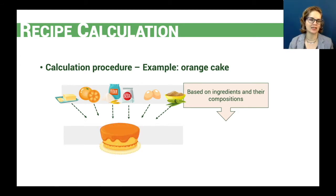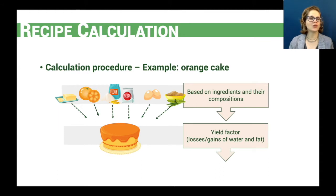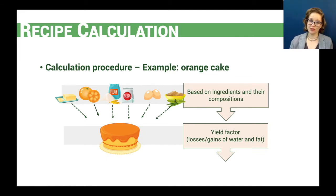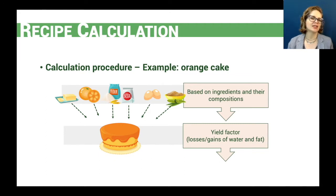The next step is to know the final weight of the recipe — how much cake we can produce with the ingredients we're using. This is the yield factor. The yield factor indicates the losses or gain of water or fat when we prepare a recipe. For example, when we bake a cake, the sum of the raw ingredients will be higher than the final weight of the cake because it loses water during the baking process.